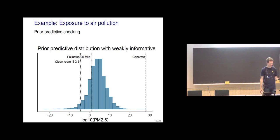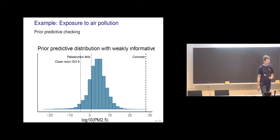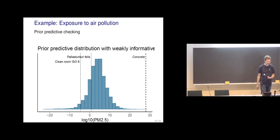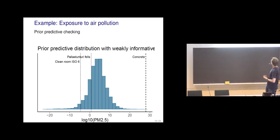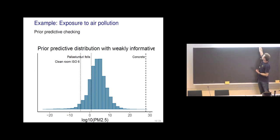We also know the prior is still too wide. In Delhi, the peak measurement was around 900 micrograms per cubic meter. Taking log base 10, that's just around 3, so on a log10 scale, Delhi's peak would appear around 3 on this plot.